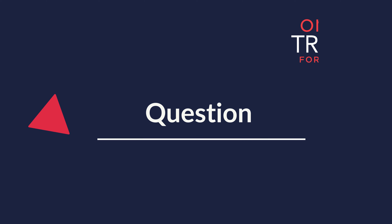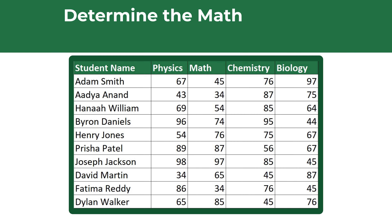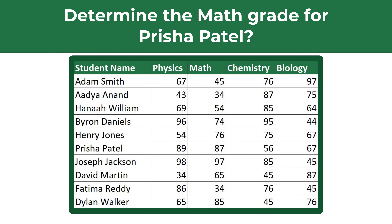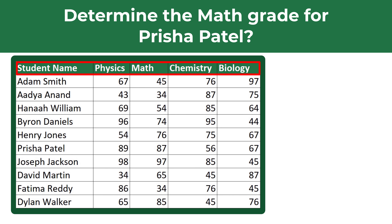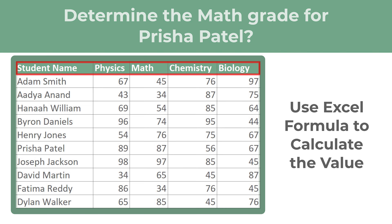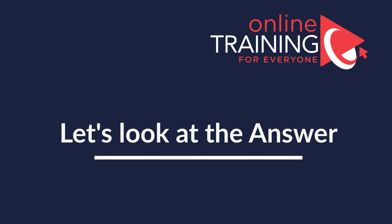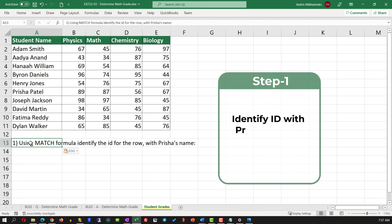Here's an interesting Microsoft Excel test question where you need to determine a value using INDEX and MATCH Excel formulas. Specifically, you need to determine the math grade for Prisha Patel. You are presented with a range of values including student names and their grades in physics, math, chemistry, and biology, and you need to enter the formula to calculate the value. We can solve this challenge in two steps. In step one, we use the MATCH formula to identify the ID for the row with Prisha's name.